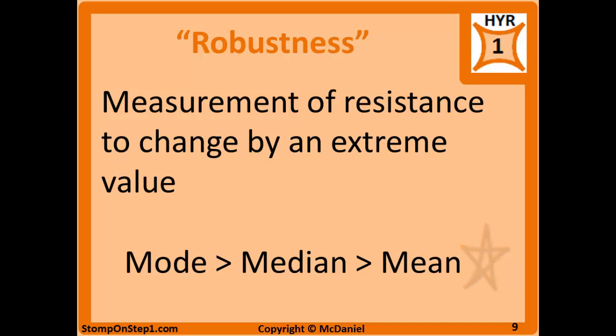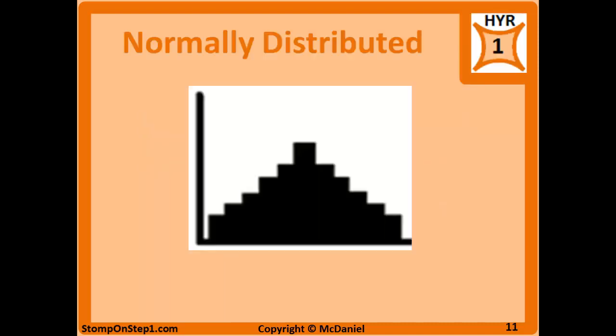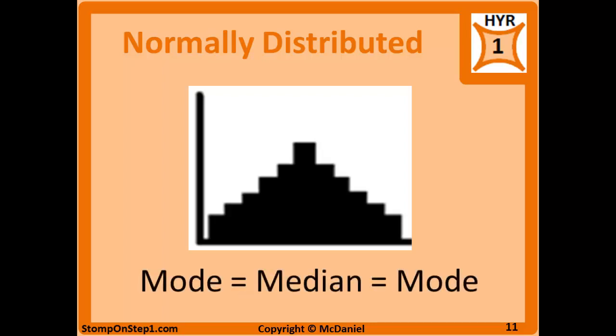Now that we've covered mean, median, and mode, we can apply what we've learned to histograms. We'll start with the easiest one—a histogram of data that's normally distributed. So the left and right sides are a mirror image of each other. In these cases, the mean, median, and mode are all the same value. They're all here at the highest point.